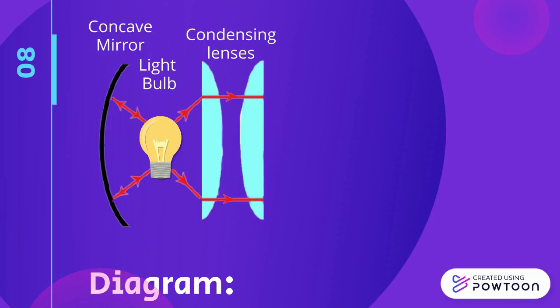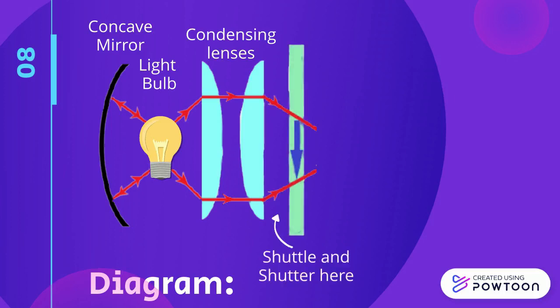Light is bent towards the normal in the first condensing lens because light travels faster in the air than in glass. And it is opposite in the second lens because light leaves the glass and enters the air, which bends away from the normal.